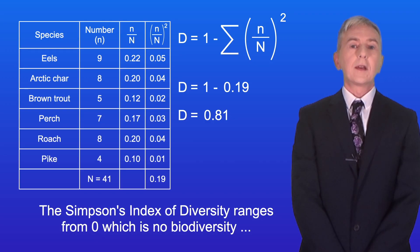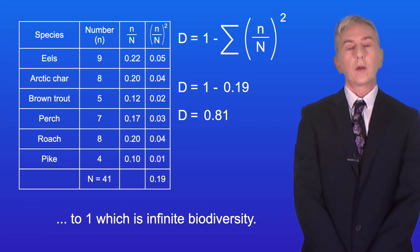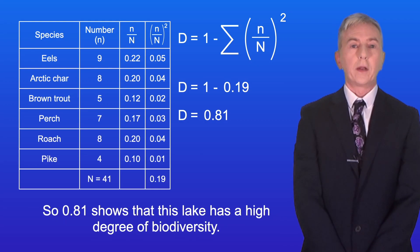Now the Simpson's index of diversity ranges from 0, which is no biodiversity, to 1, which is infinite biodiversity. So 0.81 shows that this lake has a high degree of biodiversity.